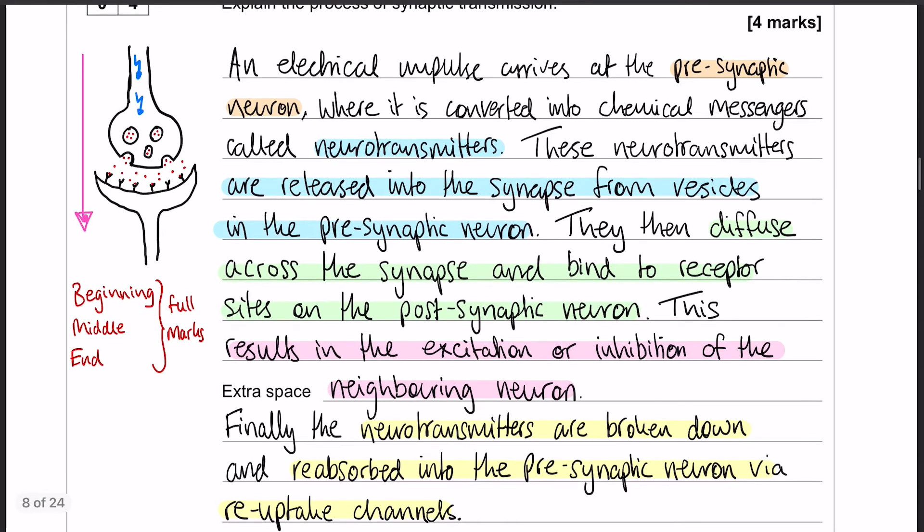So arguably I've got five pieces of information for a four marker. According to the mark scheme that final little bit in yellow you don't need in order to get the full marks, but I don't think it's an unrealistic bit of information to add for the full marker, which is why I've put it in. I think that's very achievable in the time that you have.